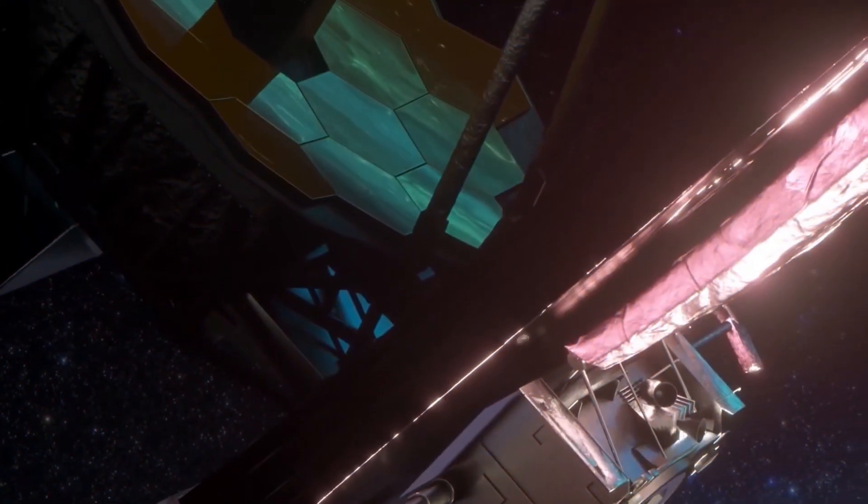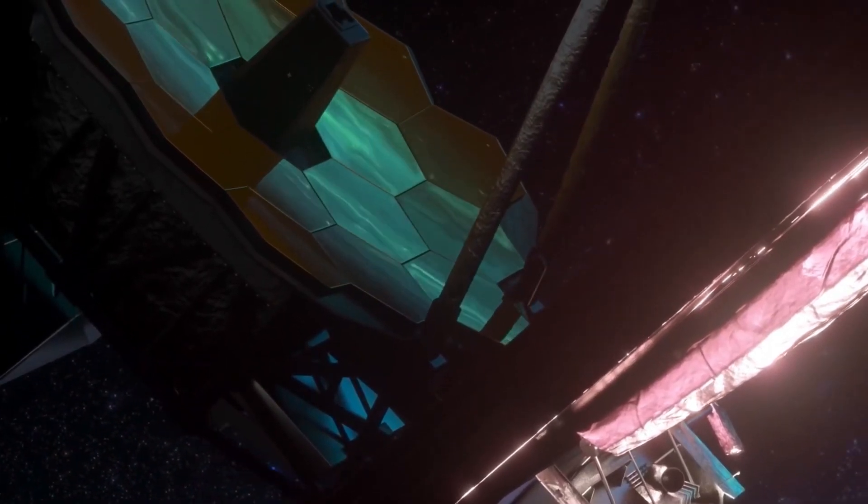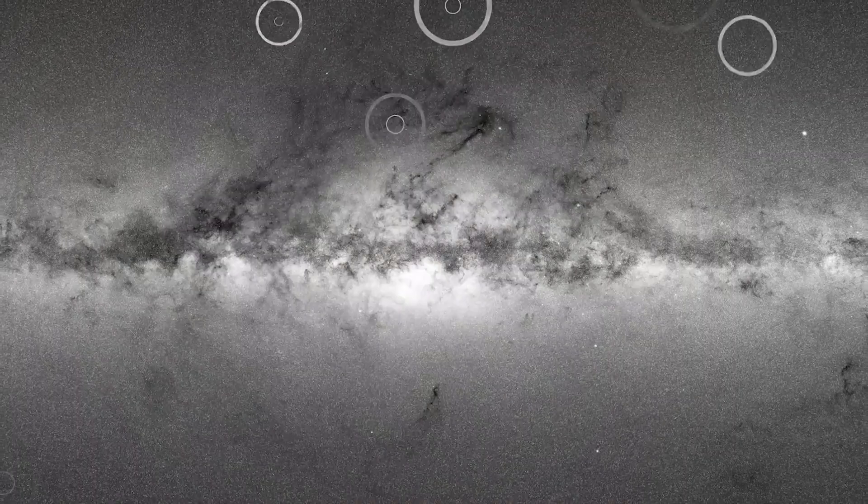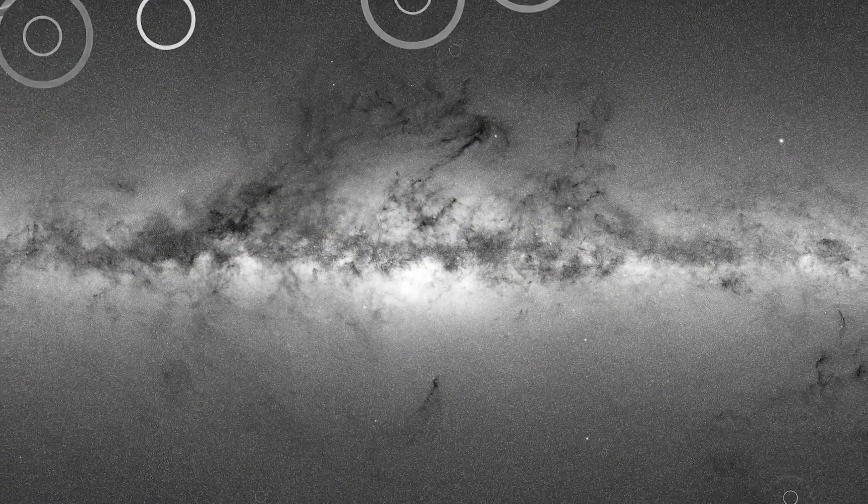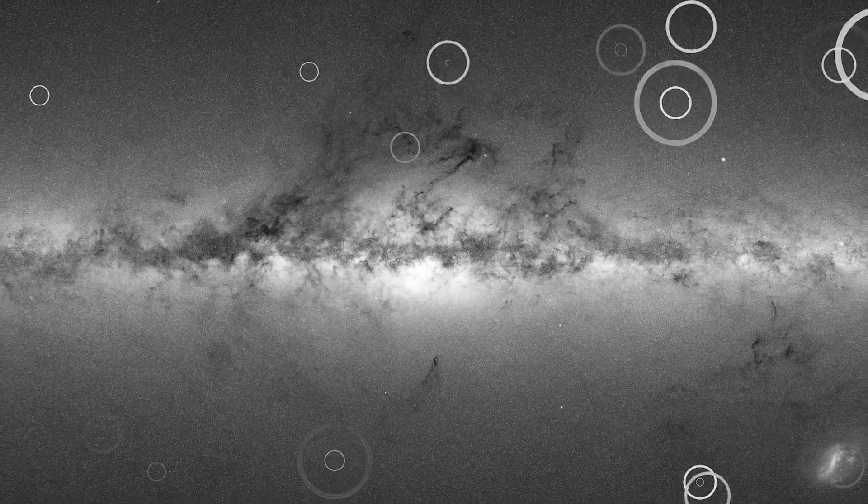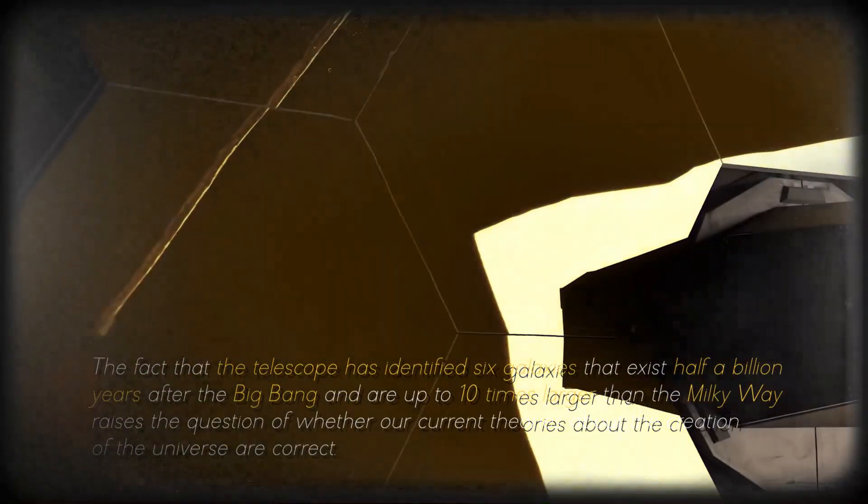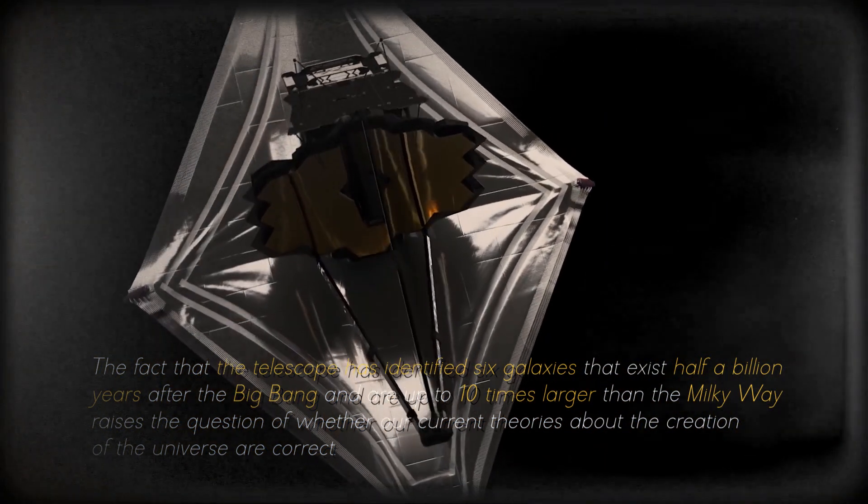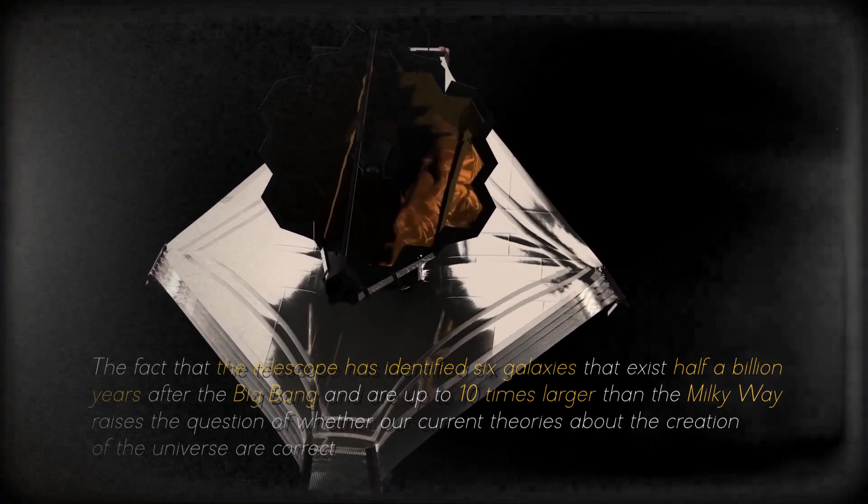According to theoretical physicist Michio Kaku, the discovery of ancient galaxies by the James Webb Space Telescope has called into question everything we knew about the beginning of the universe. Previously, these galaxies were thought to be less developed than the Milky Way, but the new findings suggest that we may be missing crucial information. The fact that the telescope has identified six galaxies that exist half a billion years after the Big Bang and are up to ten times larger than the Milky Way raises the question of whether our current theories about the creation of the universe are correct.